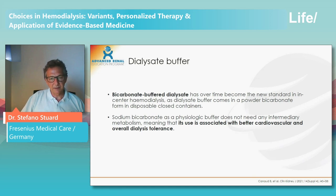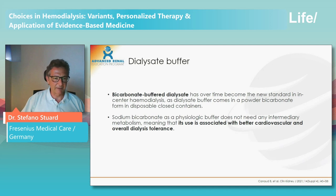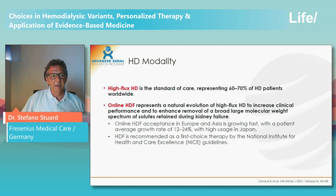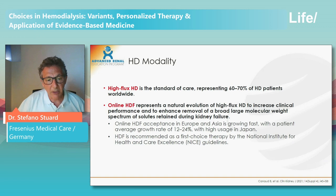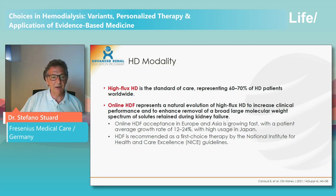For dialysate buffer, bicarbonate is preferred because it is not metabolized, unlike citrate which must be metabolized to bicarbonate. Regarding hemodialysis modality: high-flux hemodialysis is currently used for 60–70% of hemodialysis patients worldwide. Online hemodiafiltration is constantly increasing as its efficacy and benefits become better understood. In Europe and Asia, patients receiving HDF range between 12 and 24%. I am very proud to say that in our Fresenius Medical Care EMEA organization, patients receiving hemodiafiltration is around 62–63%.